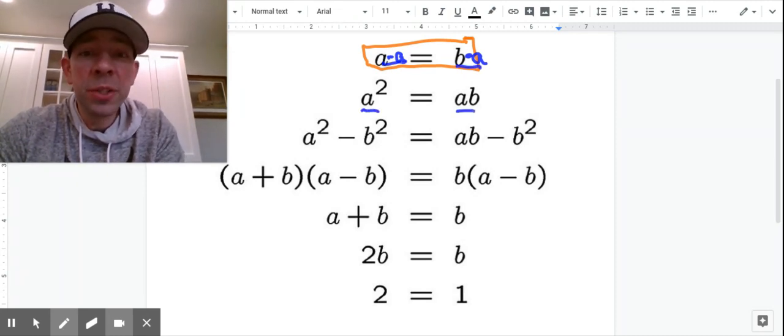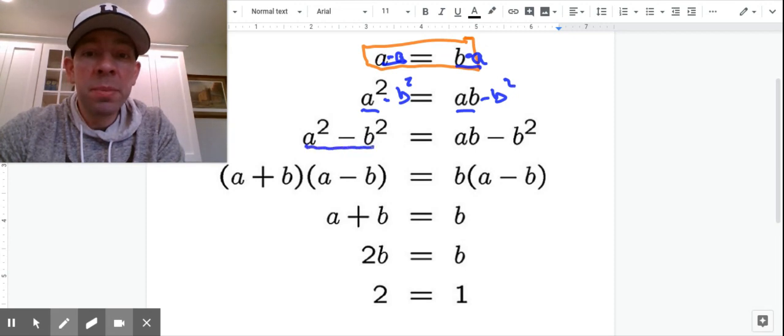And then what we did is we subtracted B squared from both sides. Again, legal. So I had A squared minus B squared here, AB minus B squared on this side.